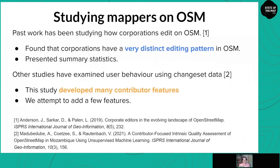Studying mappers on OpenStreetMap isn't new. Two works I want to highlight: the first is by Jennings Anderson and Dipto Sakhar from 2019, where they presented summary statistics from 10 corporate mapping teams with beautiful plots. They found that corporations have a very distinct editing pattern in OpenStreetMap, which really motivated our current work. There's also a study that examined quality assessment in Mozambique using an unsupervised approach. They developed many contributor features, which we build on and use in some of our analyses as well.